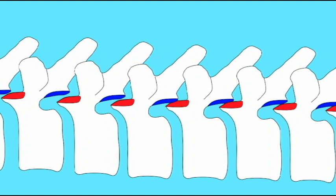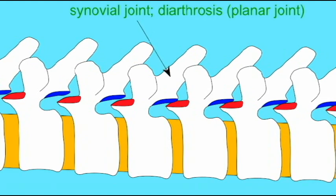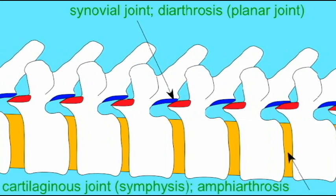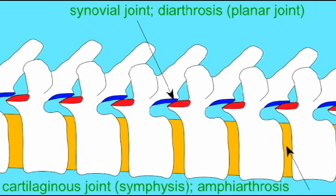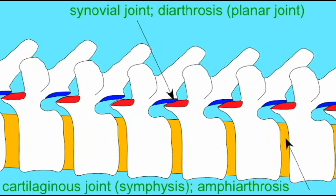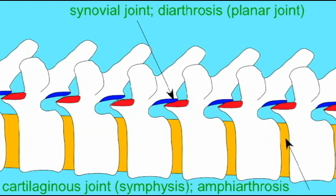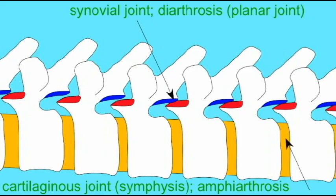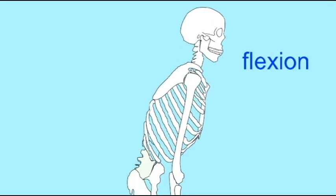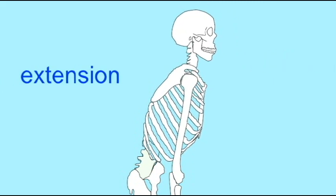Between the bodies of adjacent vertebrae, we find cartilaginous joints because bands of fibrocartilage separate the bony bodies of these vertebrae. This type of cartilaginous joint is known as a symphysis. Because a little bit of movement is permitted between the bodies of adjacent vertebrae, these are known as amphiarthroses.